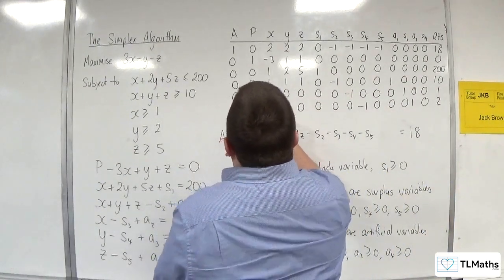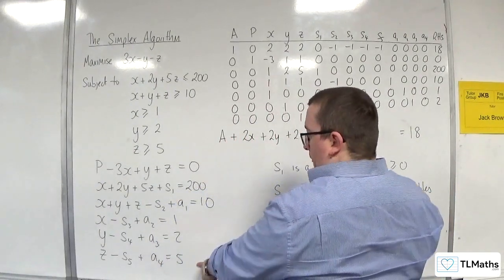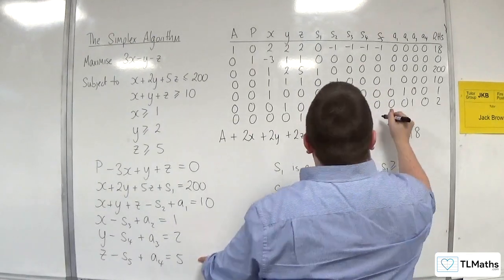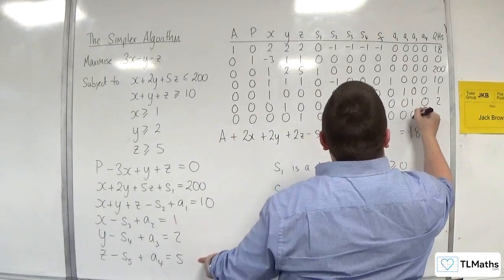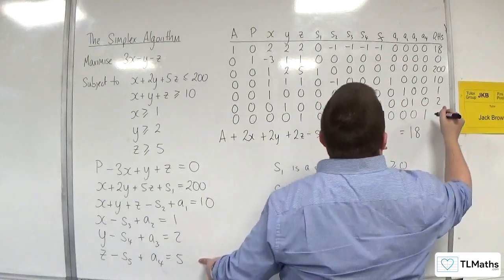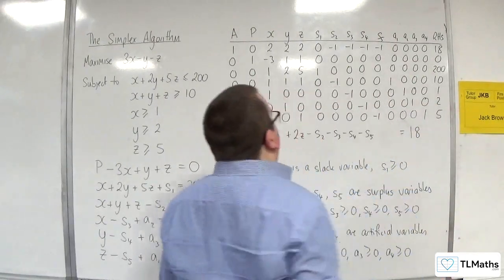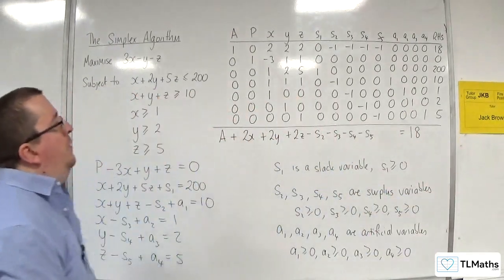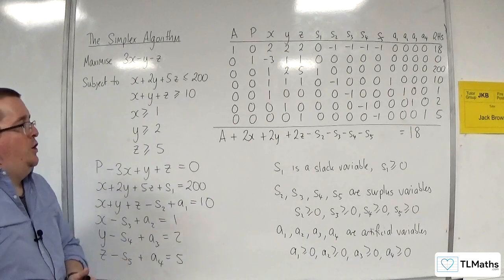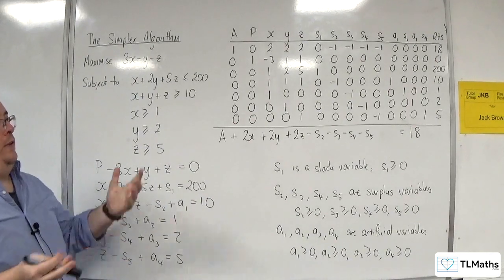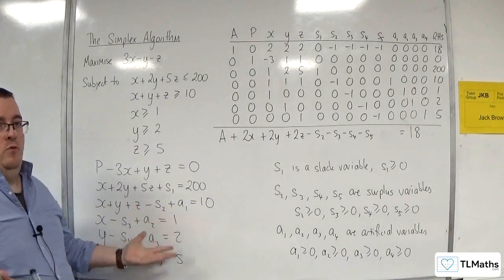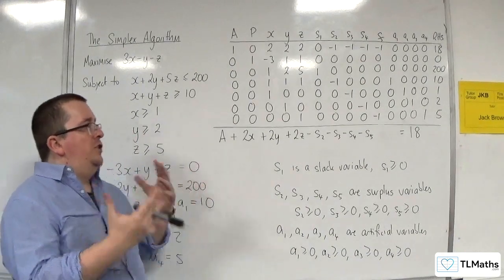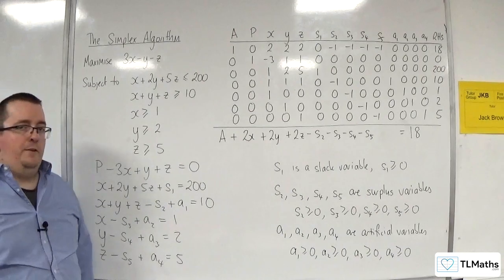And the last row for z greater than or equal to 5: 0, 0, 0, 0, 1, then zeros, then minus 1 for s5, then 0, 0, 0, 1 for a4, right-hand side 5. That is my initial tableau for this LP problem, which would be using the two-stage simplex algorithm method.